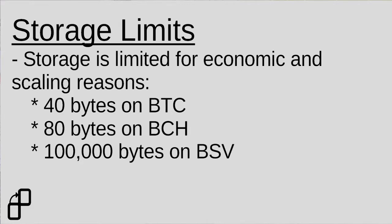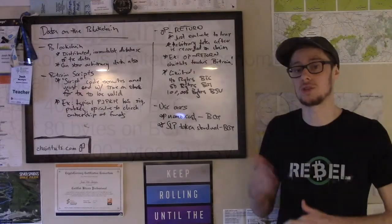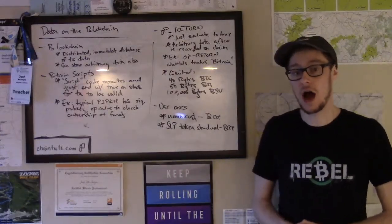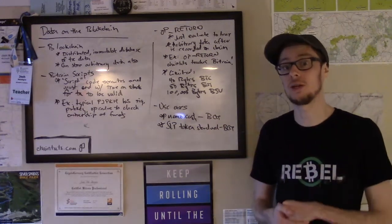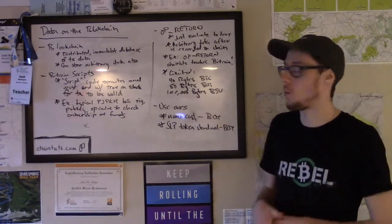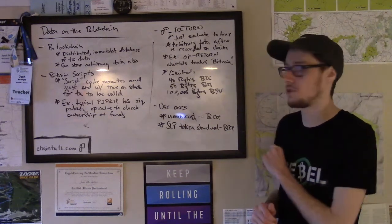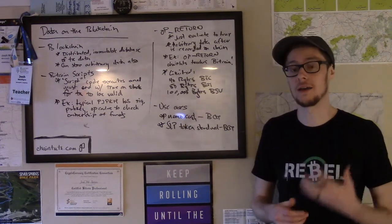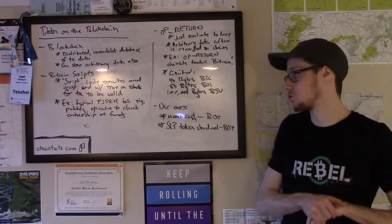BSV — Bitcoin Satoshi Vision — which is another fork that's out there, really believes in allowing larger data to be included in the blockchain. They allow 100 kilobytes, or 100,000 bytes, to be included in those OP_RETURN transactions.